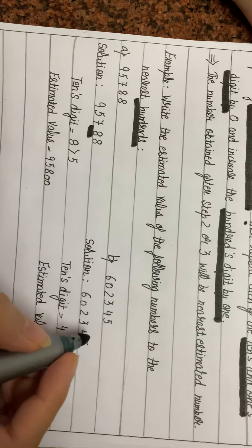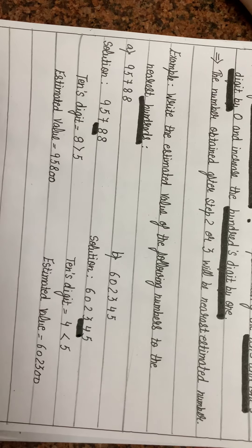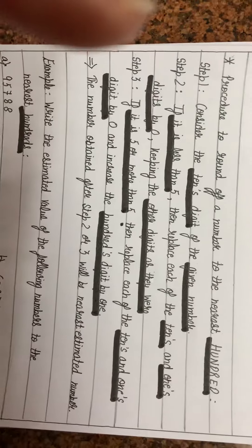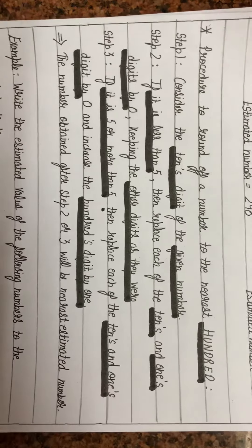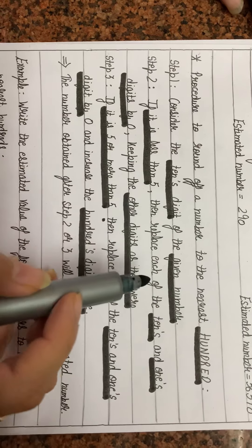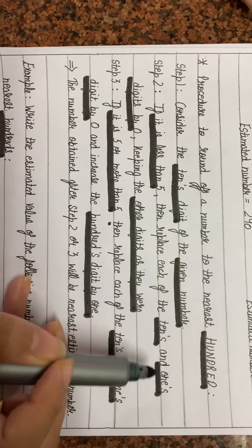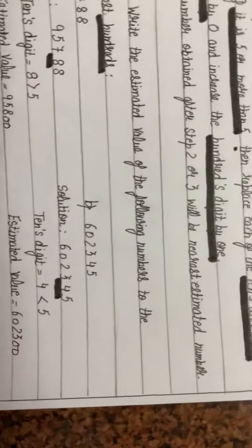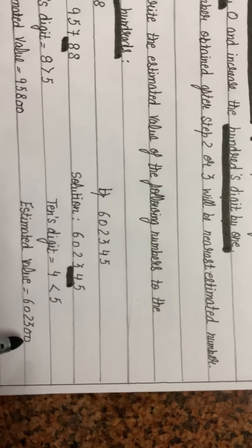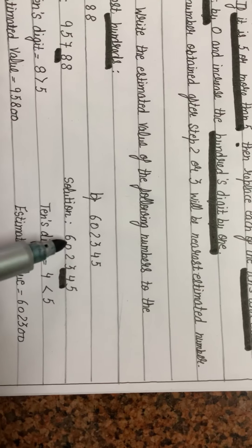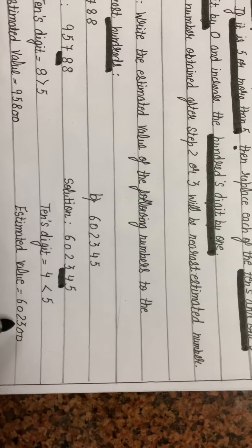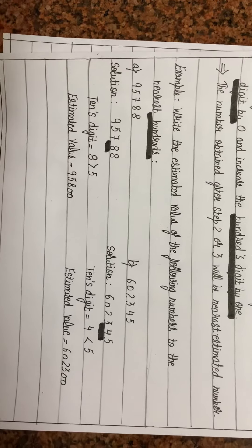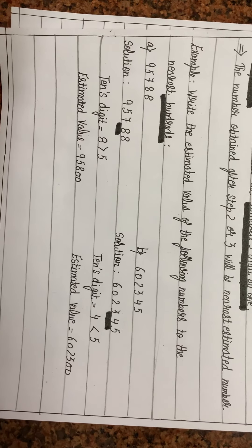Now consider 6,02,345. The digit at tens place is 4, which is less than 5. We follow step 2: replace tens and ones digits by 0, keeping other digits as they were. So ones and tens become 0 and the other digits — 6, 0, 2, 3 — remain as they are. The estimated value is 6,02,300.